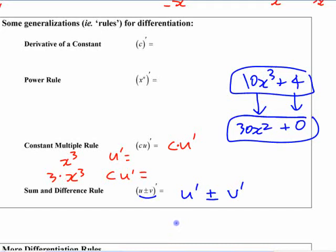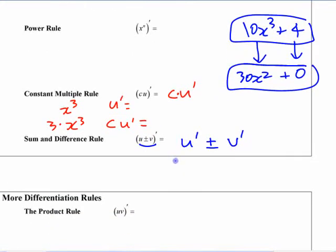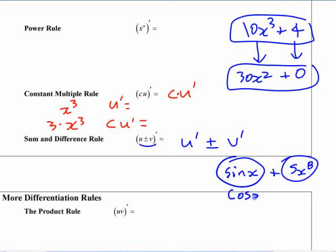That might be sort of obvious, but finding the derivative of some function together like that, you find the derivative of each component, each part of the sum. If you want the derivative of sine x plus 5x to the 8th, as long as you know what each individual derivative is, cos x plus 40x to the 7th.